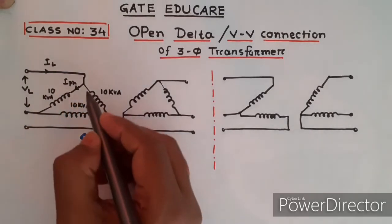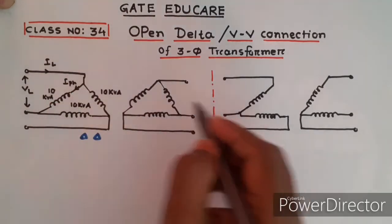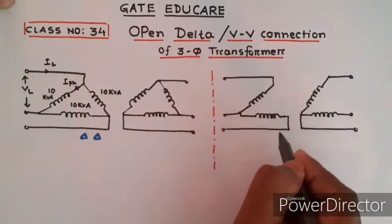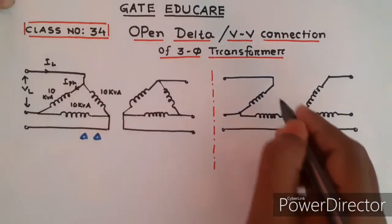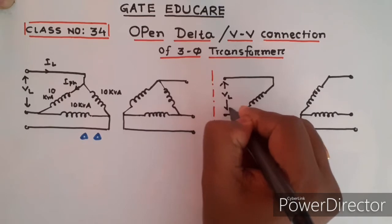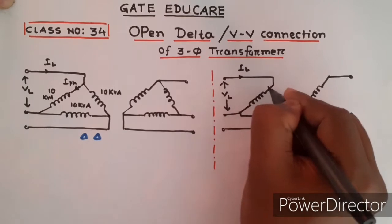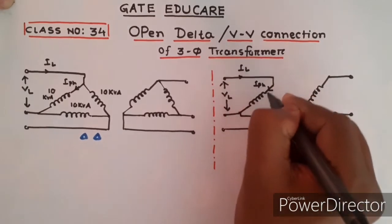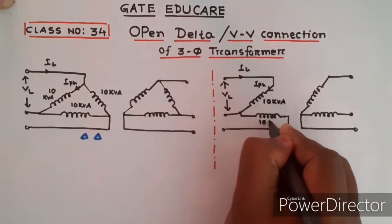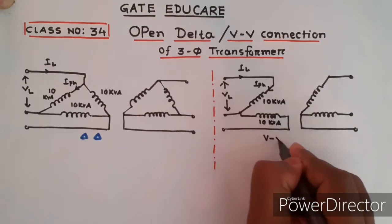Under light load conditions, if one of the transformers is disconnected from the system, the remaining two transformers will supply continuous power. In this open delta configuration, this is the line voltage, this is the line current, and this is the phase current. The rating of each remaining transformer is 10 kVA, and this acts as an open delta or V-V connection.